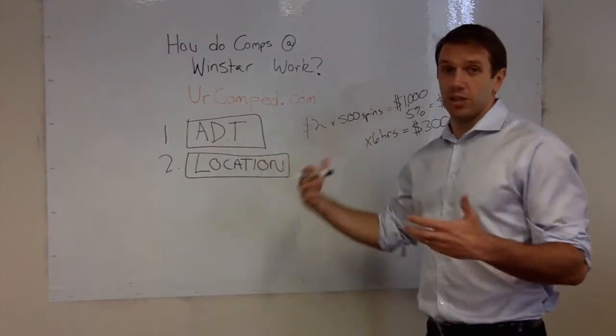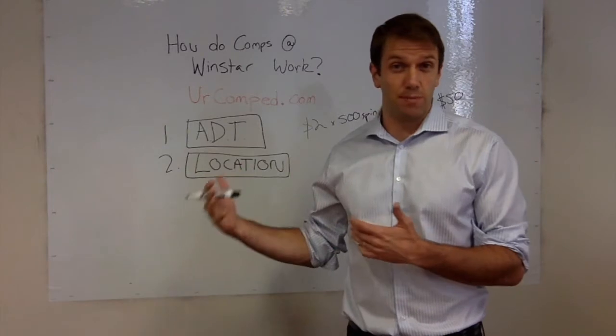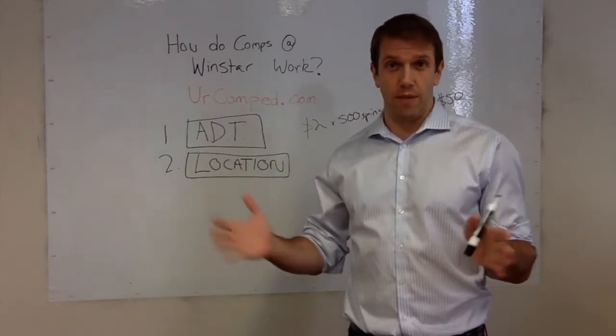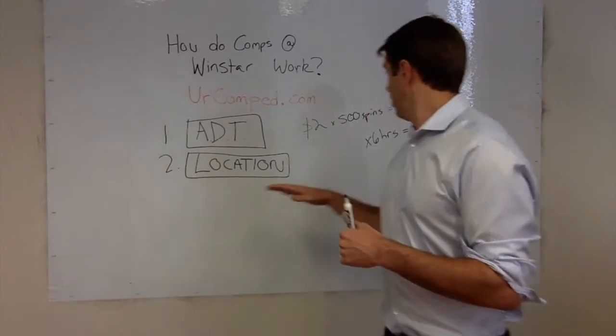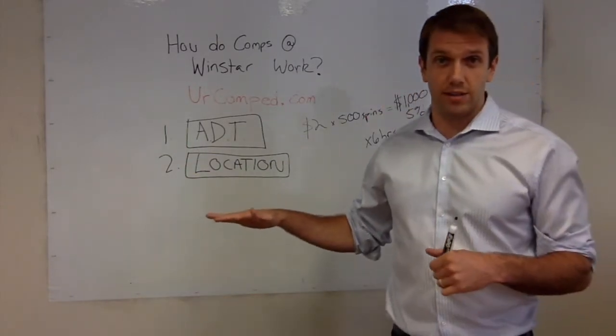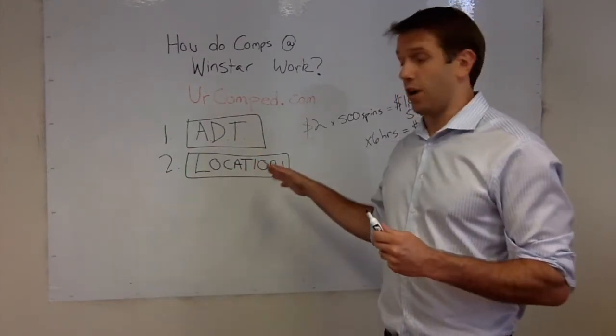And so ADT is Average Daily Theoretical. A lot of times casinos will take a rolling average of 6 months or 9 months. So out of all the trips you've made to that casino, you take your theoretical total and divide it by the number of days you've been there. So the higher you can get your ADT, the better your offers are.